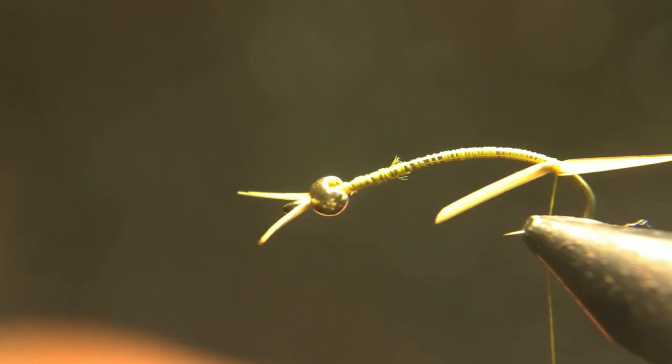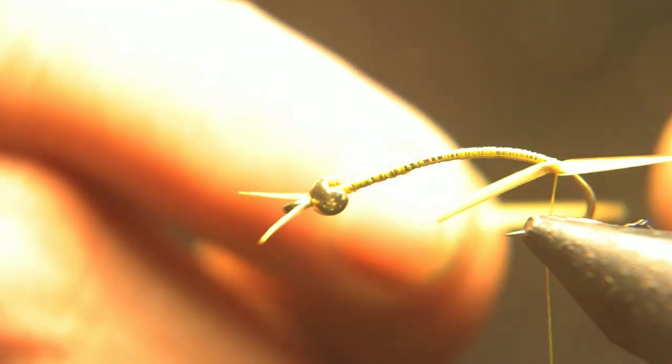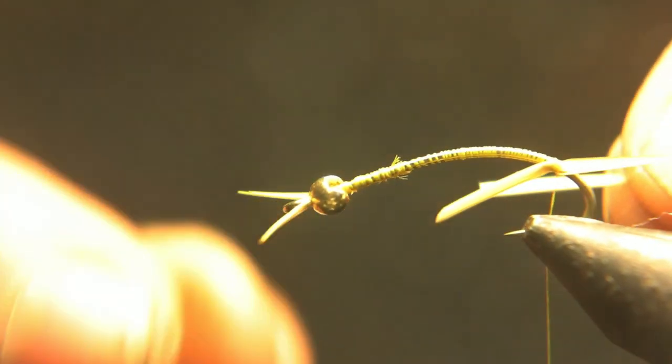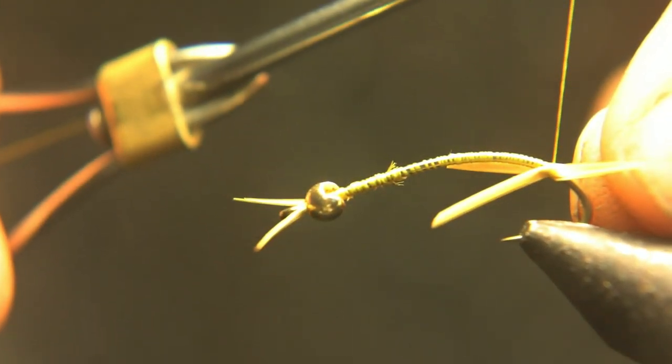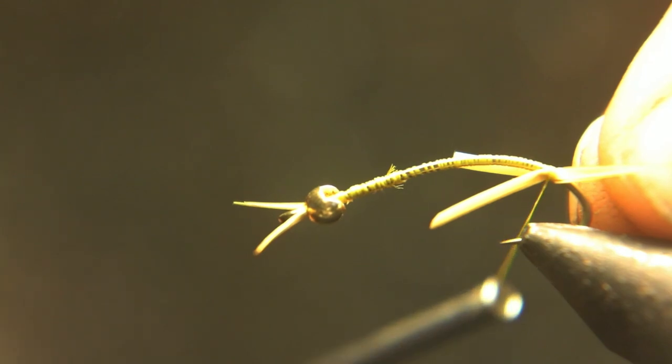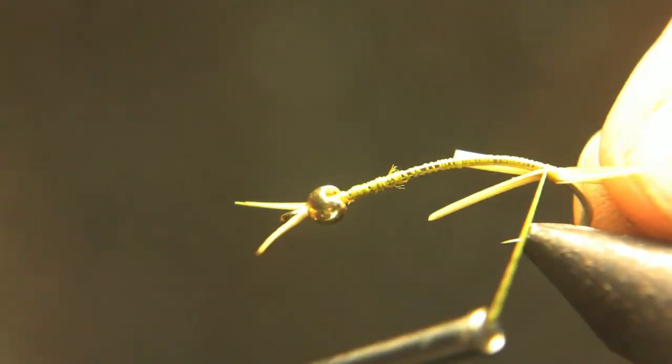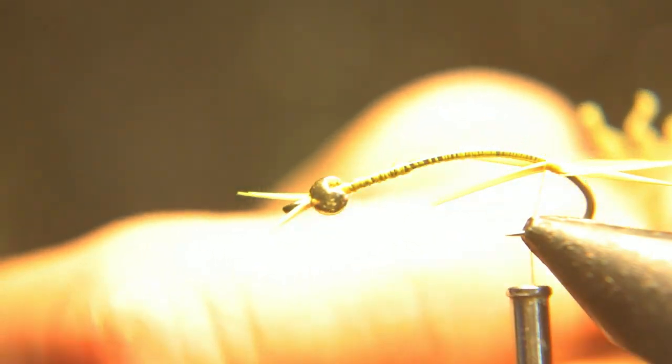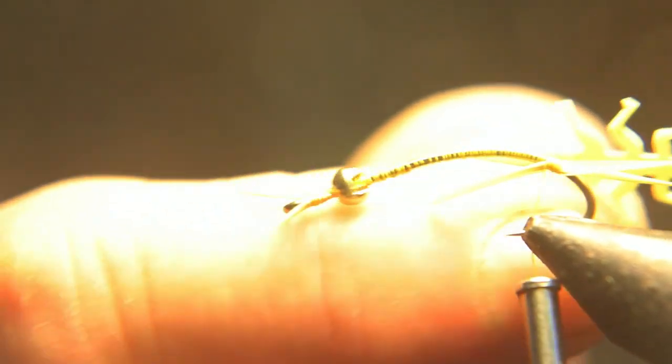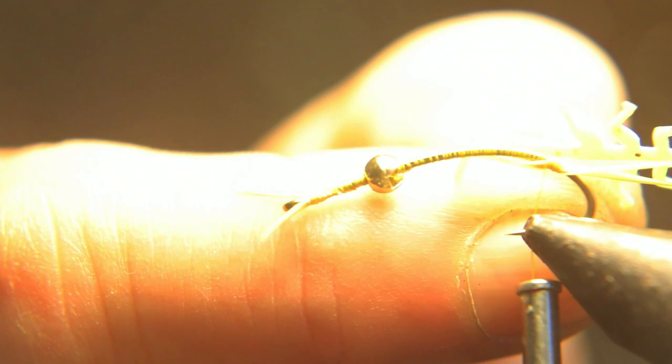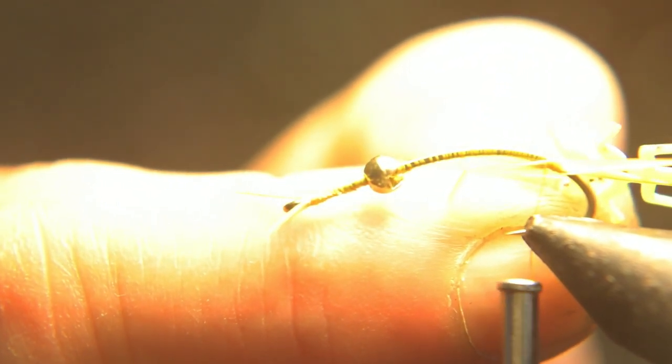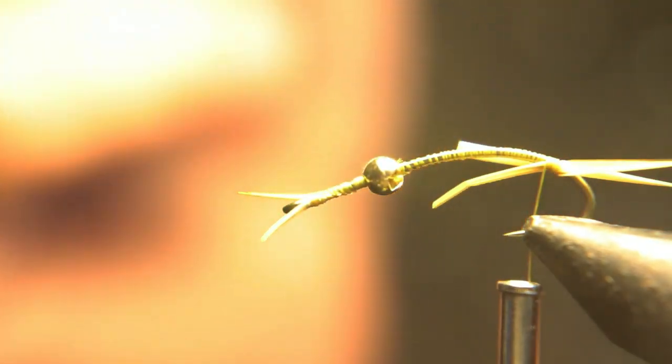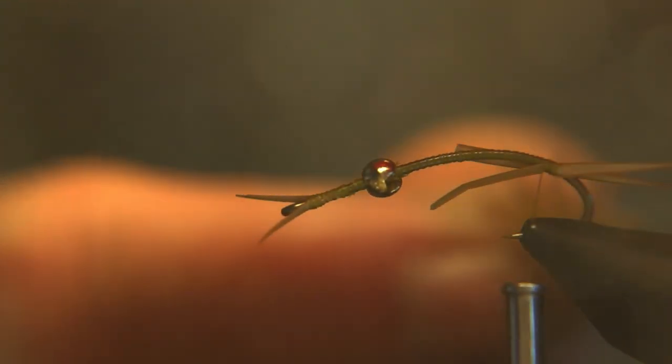You're going to tie in these tails. Again, you want to make sure the curve is bent out so they flare out. I like to make this as long as the thorax area of the fly, so you could take one of your legs or something and measure the length. That's how long I like to make them.